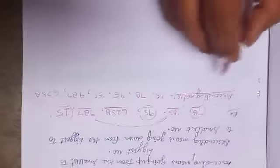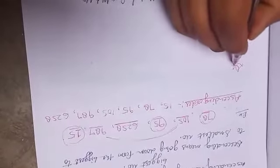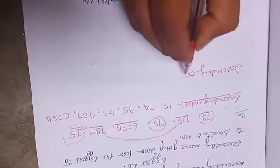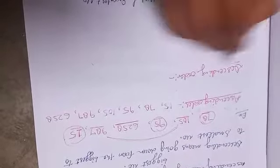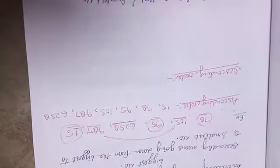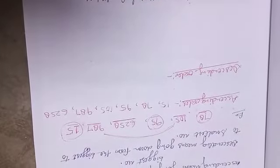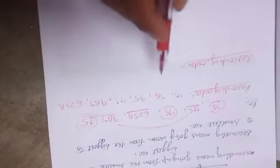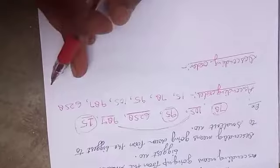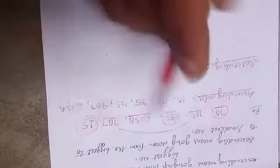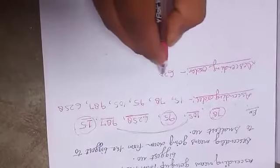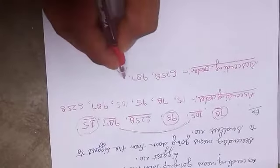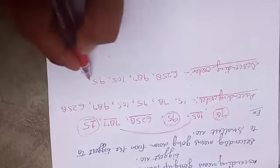Now if you want to write these numbers in descending order, it means you write them in reverse order — going down from the biggest number to the smallest. So the biggest number is 6258, after that 987, after that 105, after that 95.